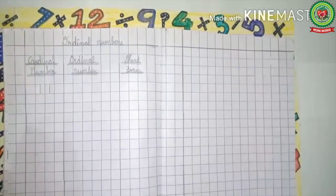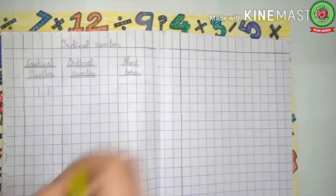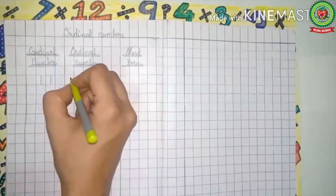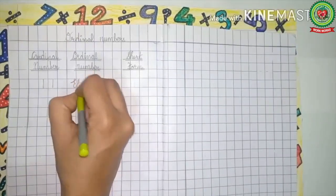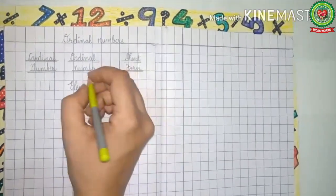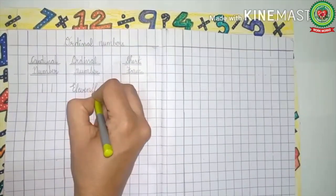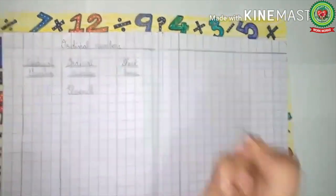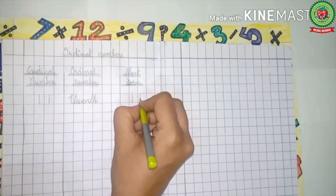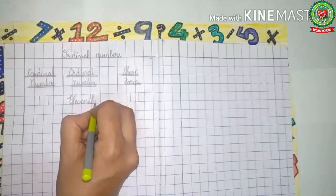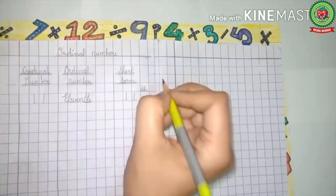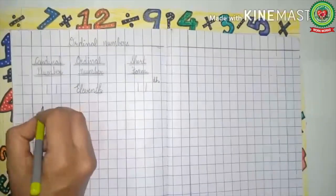The first cardinal number we will write is 11, and the ordinal number of 11 is 11th. Spell 11 with me: E-L-E-V-E-N. Then we add TH and it becomes 11th. For the short form, we write 11 and add the last two letters TH, and it becomes 11th.